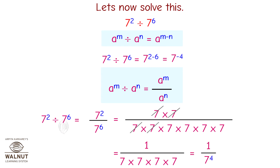You can see that we are doing the division using two different laws and we get two different answers where the LHS is the same. So we can say that 7 raised to minus 4 is equal to 1 upon 7 raised to 4.